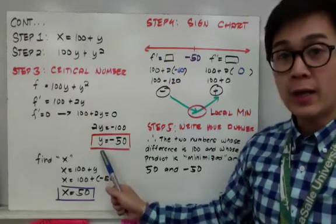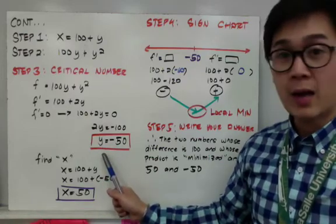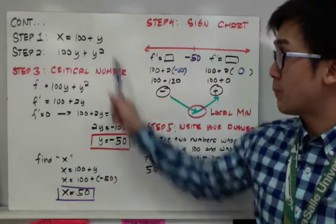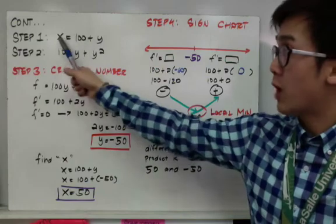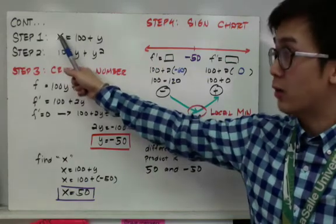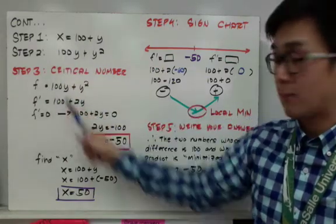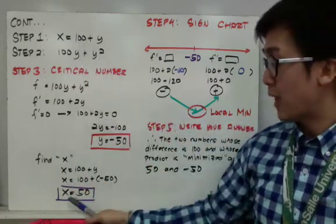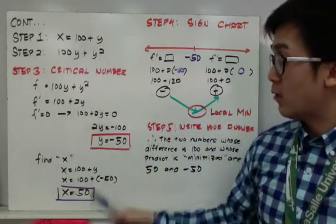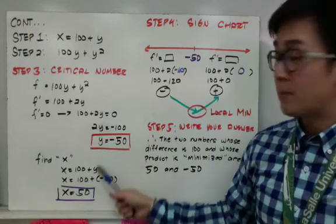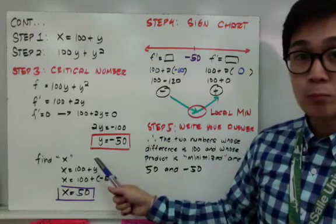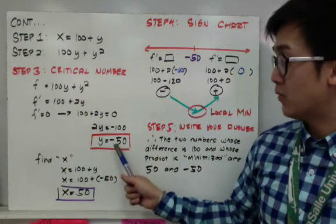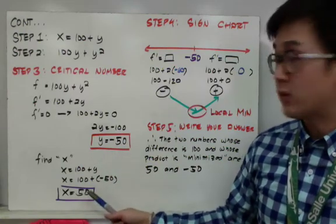Since meron na tayong y, pwede na nating mahanap si x. Kasi yung y value natin is negative 50. Kapag ginamit natin si step one, makukuha natin yung x value. Finding the value of x using step one, meron akong x equal to 50. So meron na tayong dalawang numbers: yung first number will be negative 50 at yung second number will be 50.